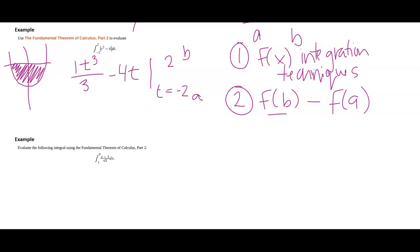So I'm going to say 2 cubed over 3 minus 4 times 2, and I'm going to subtract what happens when I plug in F of a. So that's going to be negative 2 cubed over 3 minus 4 times negative 2. Let's simplify this a little bit. I get 8 thirds minus 8 minus negative 8 thirds.